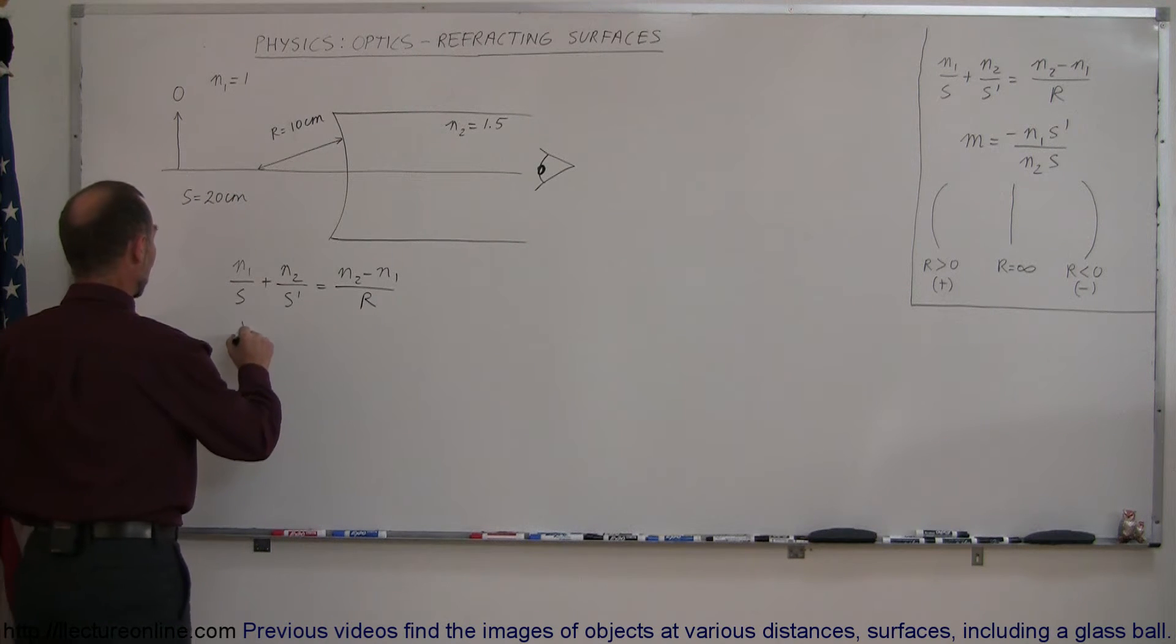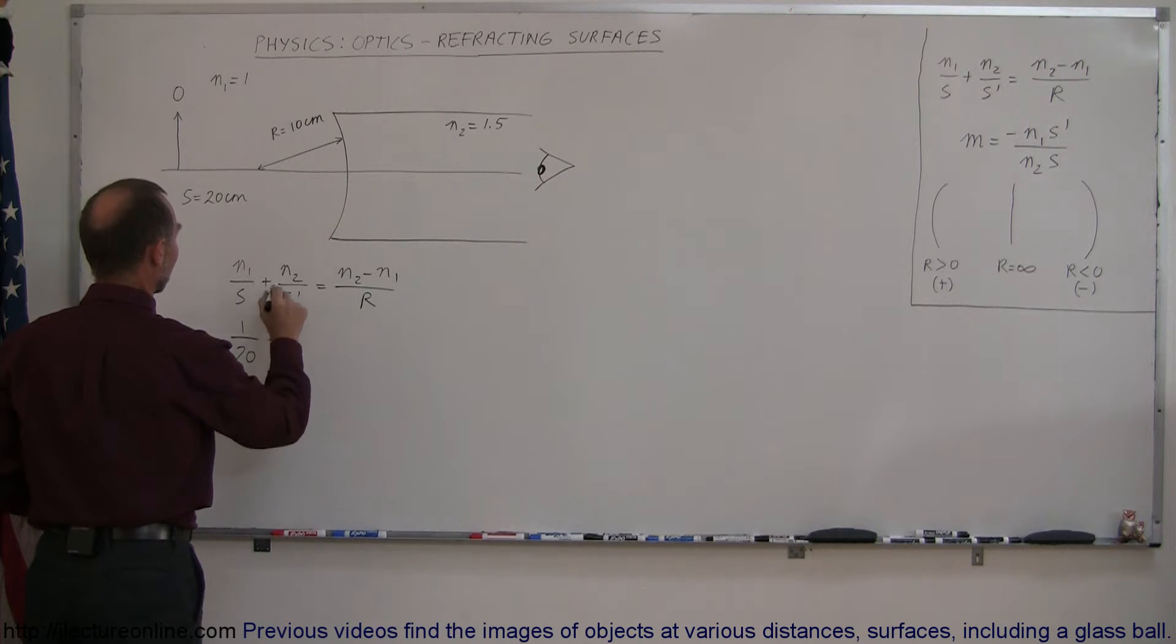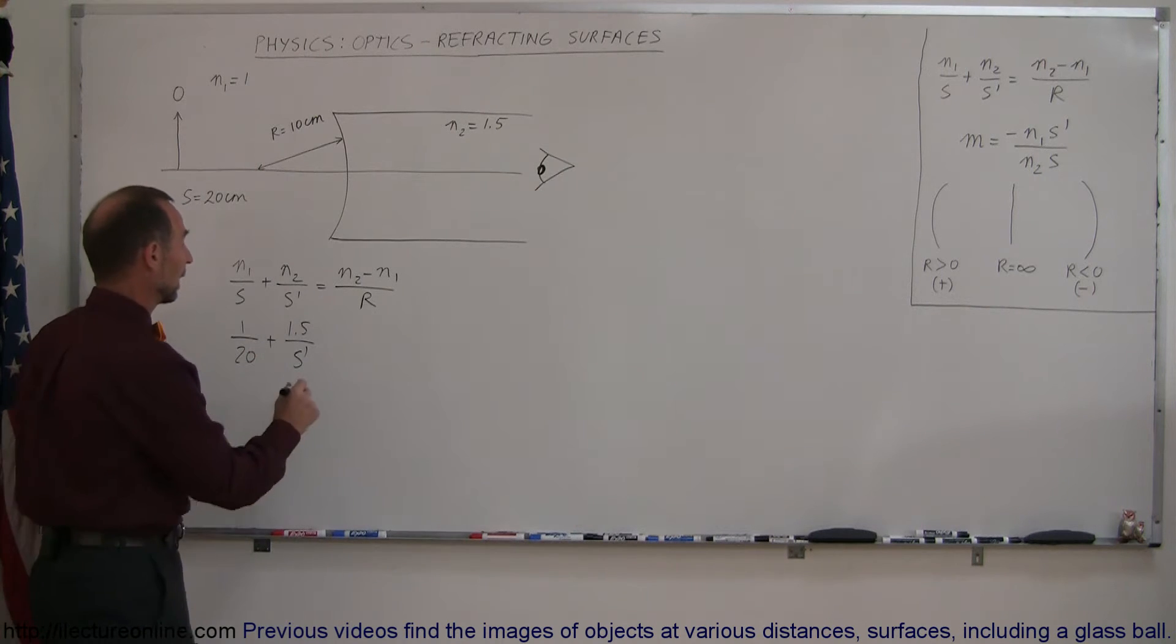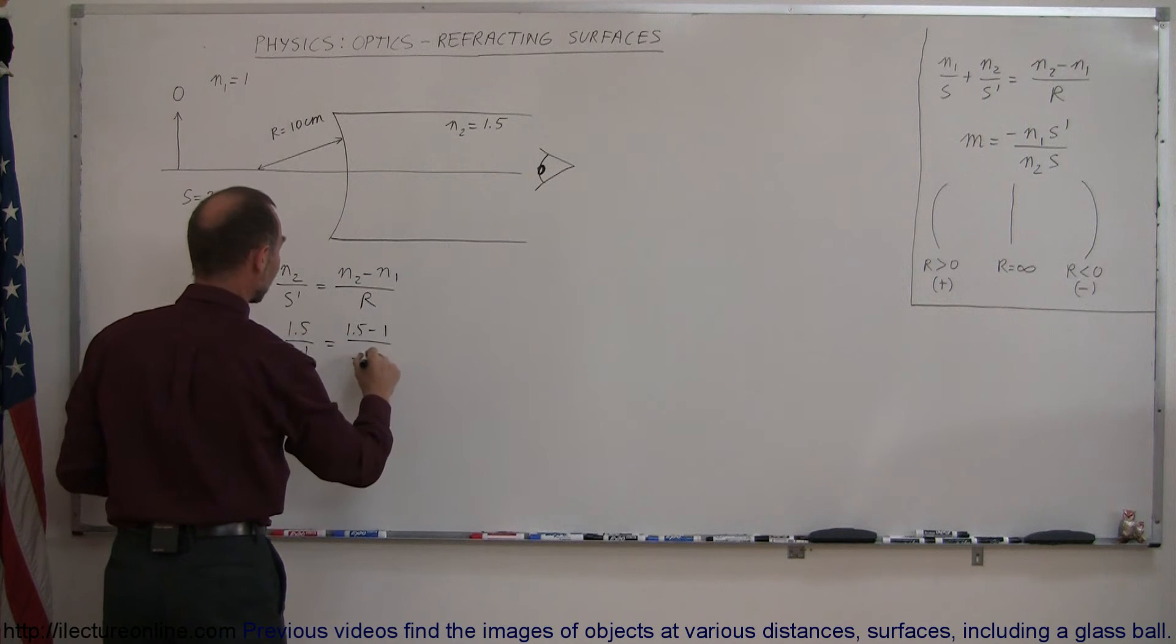N1 is the index of refraction on the object side. Object distance, 20 centimeters, plus N2, which is 1.5. S prime, which is what we're looking for, that's the distance to the image. And that is equal to N2, which is 1.5 minus 1 over R, which we said was going to be a minus 10.